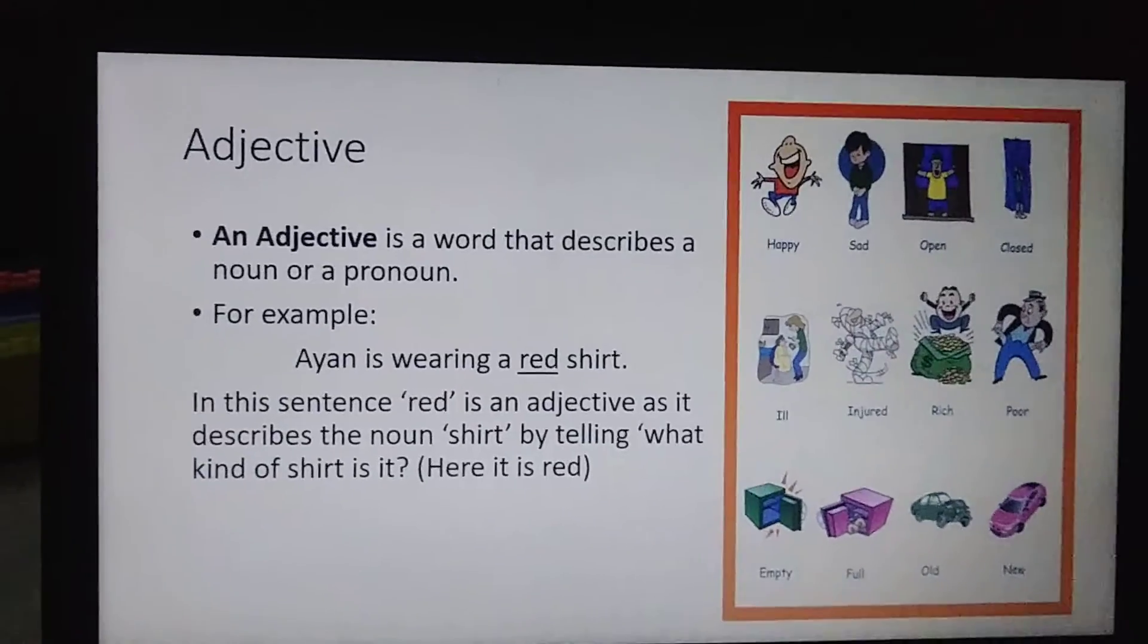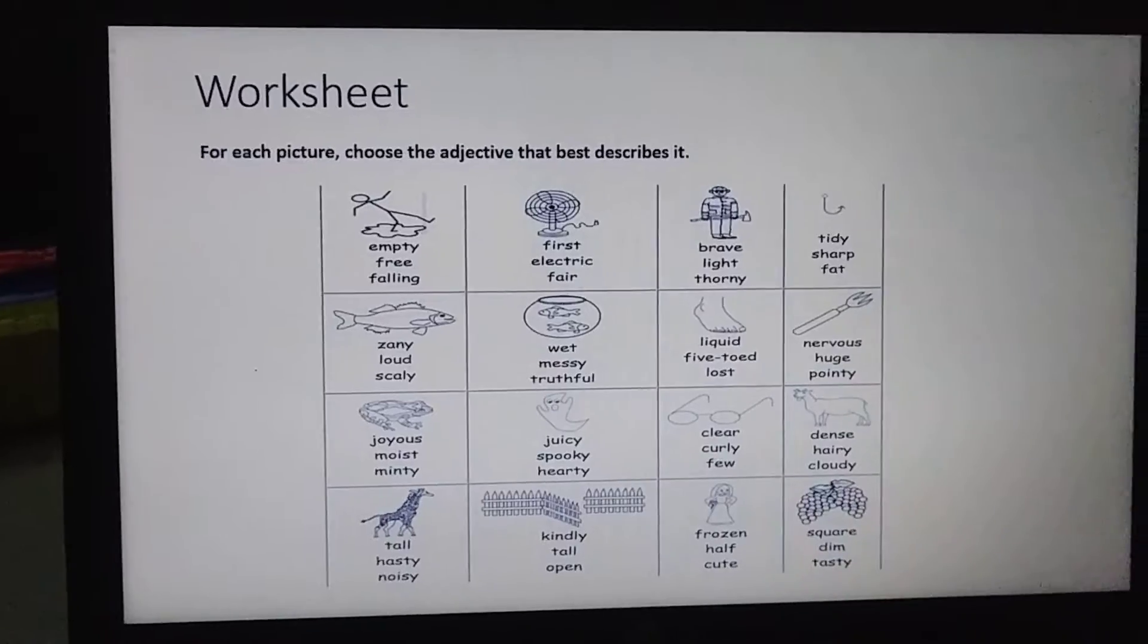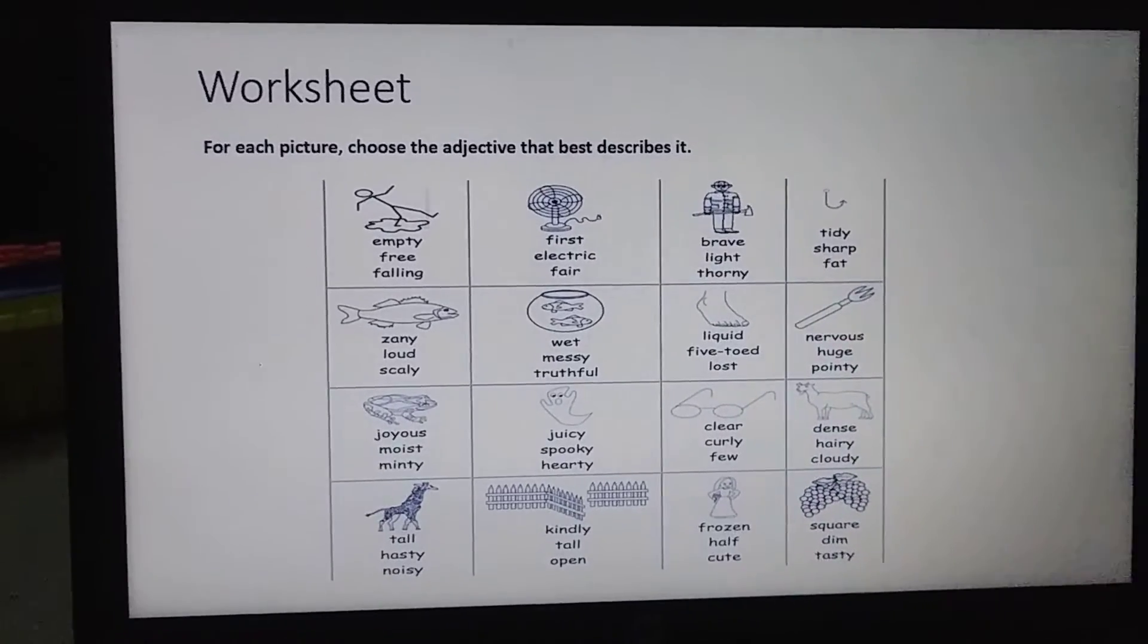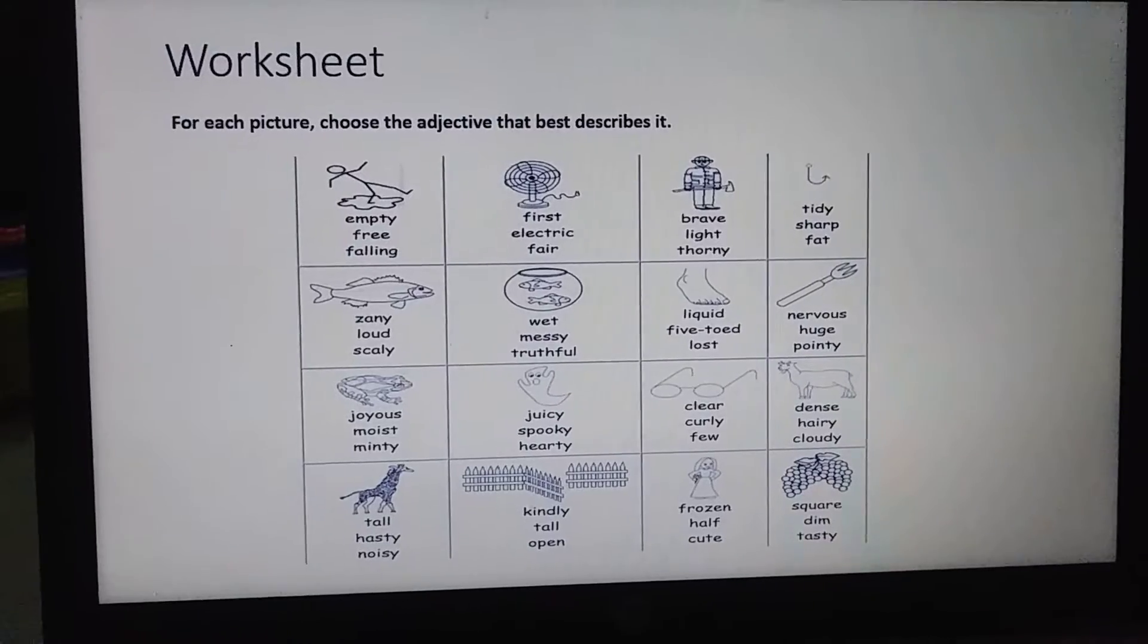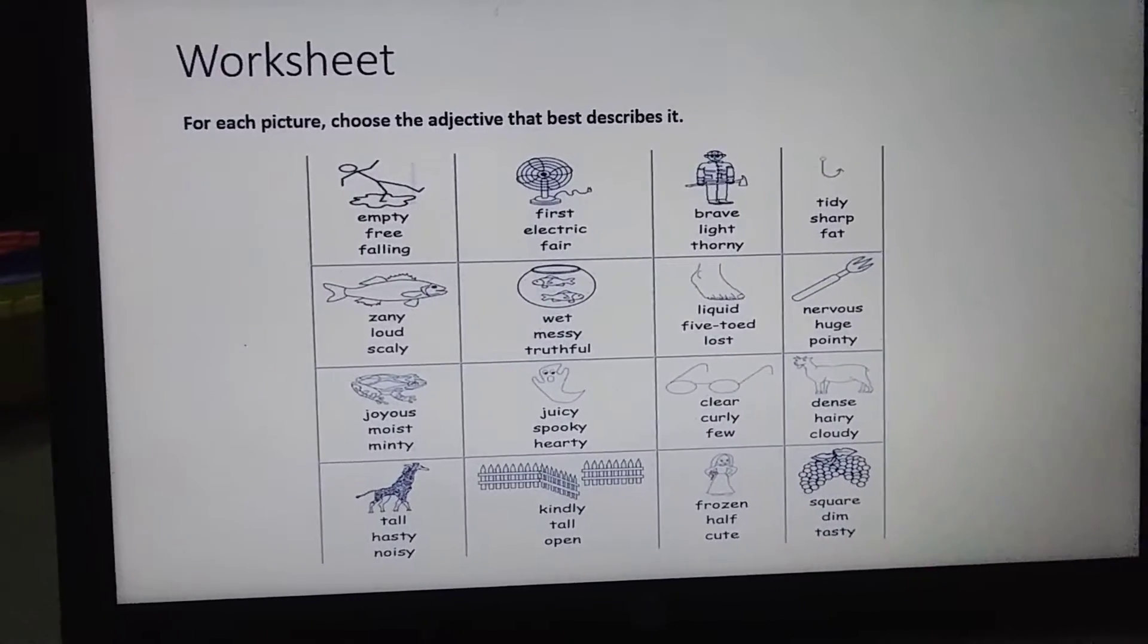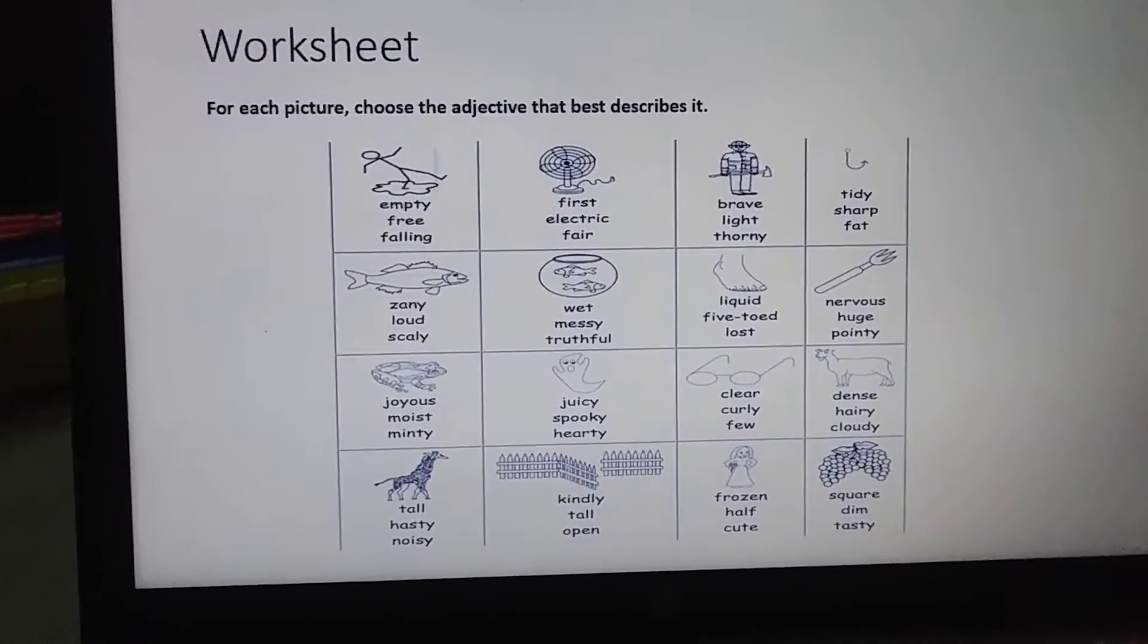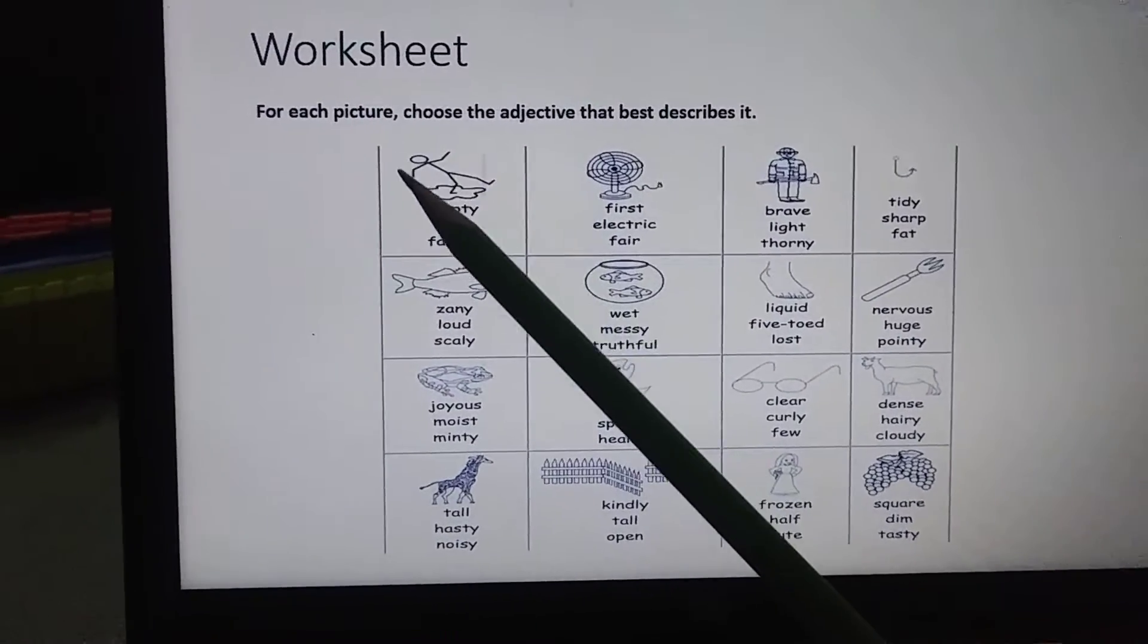Let's move forward. This is a very interesting worksheet over here with pictures. Hopefully you are going to enjoy this one. For each picture I have given you three different words and there is a picture with it that is describing something. Now what you have to do is circle out the one that is completely fitting with the picture. For example, the first one over here, there is a man.